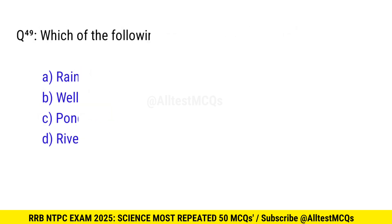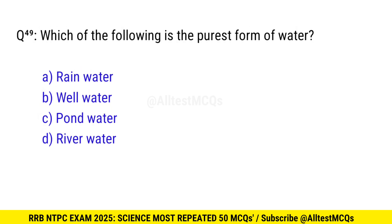Question 49. Which of the following is the purest form of water? Correct option is A, rainwater.